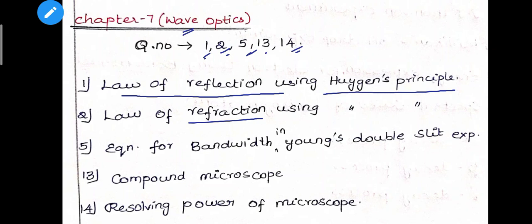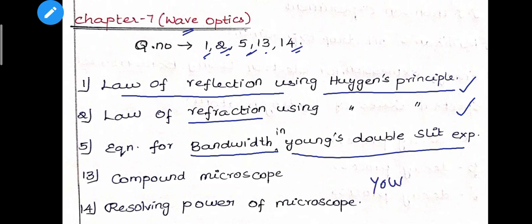Based on Huygens' Principle - Law of Reflection and Refraction - very important question. Next, equation for bandwidth in Young's Double Slit experiment. Describe the Young's Double Slit experiment. That is an important question. Compare this with the previous fourth question. Next, 13th question - Compound Microscope, important question. Next, 14th question - Resolving power of a microscope. This is Wave Optics important questions.